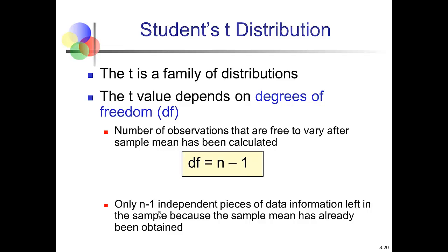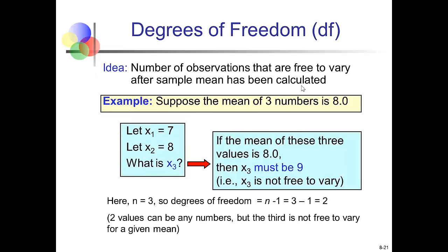For example, suppose the mean of three numbers is 8. If the first value is 7 and the second is 8, the third value must be 9—it is not free to vary. Two of these data points can vary, one cannot. So we have two degrees of freedom: sample size 3 minus 1 equals 2.